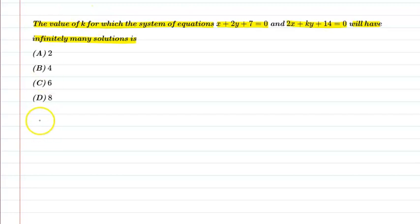Let us see the given information in this question. We have a pair of linear equations: x plus 2y plus 7 is equal to 0. This is equation number 1, and another equation is 2x plus ky plus 14 is equal to 0. This is equation number 2.